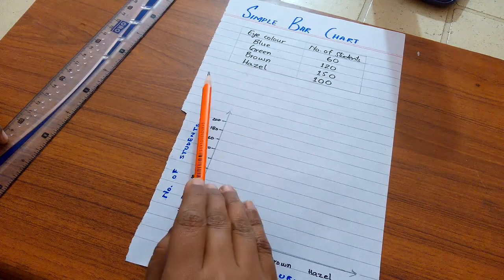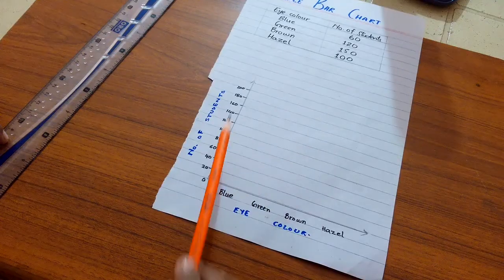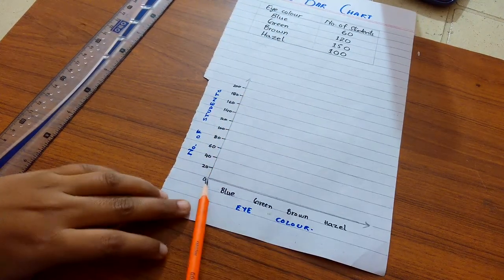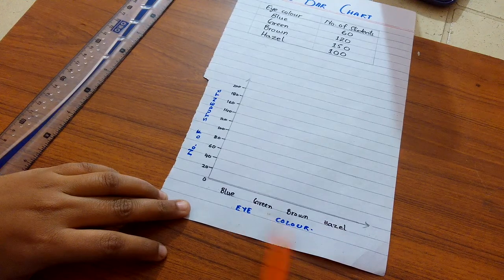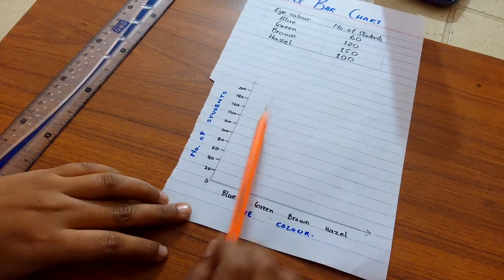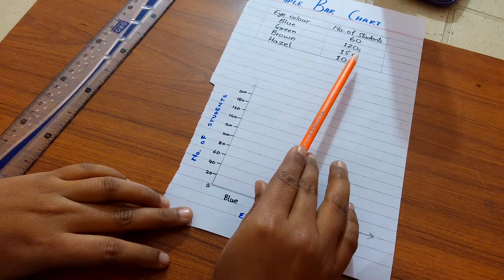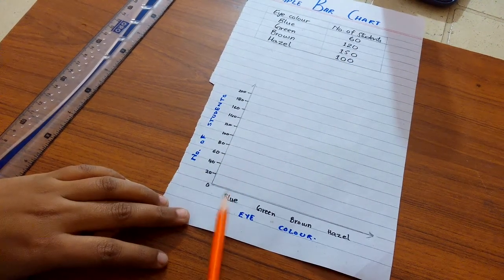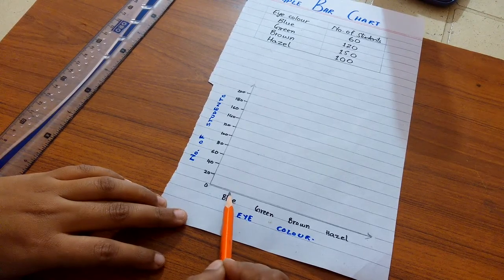Now we will construct a simple bar chart. At the horizontal axis we take eye color, and at the vertical axis we take frequencies, which is our number of students.